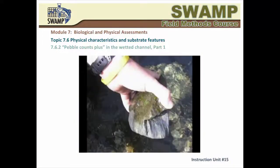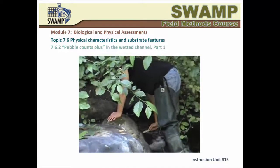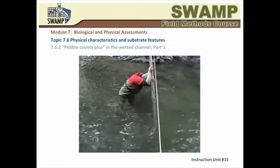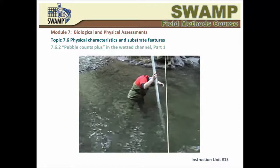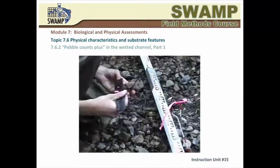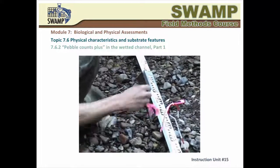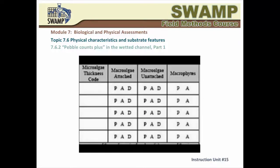If the particle you picked up is larger than 64 millimeters, evaluate how much of it was embedded in the fine sediment before you picked it up. If the particle is a boulder, find what looks like the intermediate axis. Please note that if one of your transect points falls on a gravel bar that is contained within the wetted channel, you do the assessment at that point even though it is dry. The last three characteristics you assess at the transect point are part of the algae protocol, including evaluation of microalgae thickness and notes on the presence or absence of macroalgae and macrophytes.